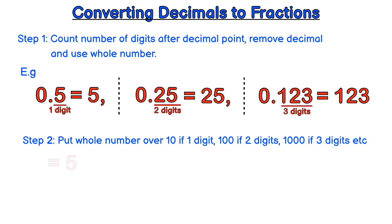So for instance, 0.5 equals 5 over 10, because we had one digit after the decimal.